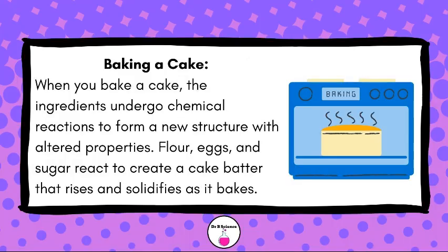Baking a Cake: When you bake a cake, the ingredients undergo chemical reactions to form a new structure with altered properties. Flour, eggs, and sugar react to create a cake batter that rises and solidifies as it bakes.